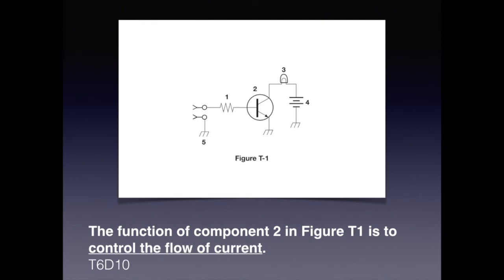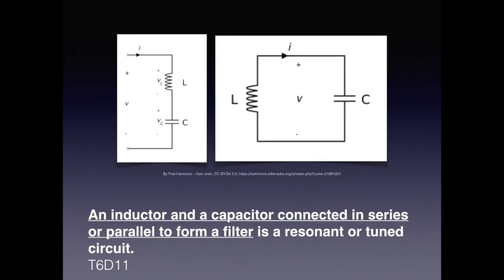Going back to Figure T1, you also need to know for the exam that the function of component 2 in Figure T1 is to control the flow of current. It's actually called a bias resistor when it's at the base of a transistor. You need to know that an inductor and a capacitor connected in series or parallel to form a filter is a resonant or tuned circuit.